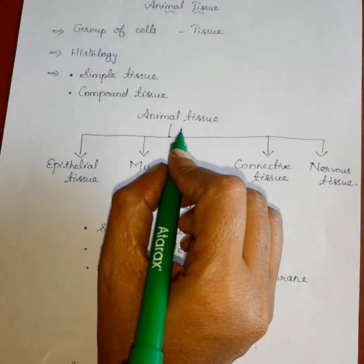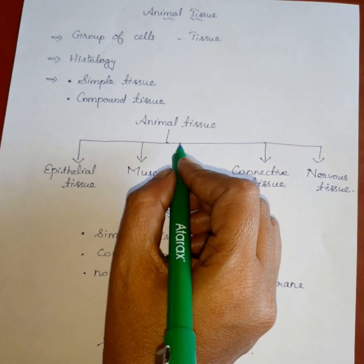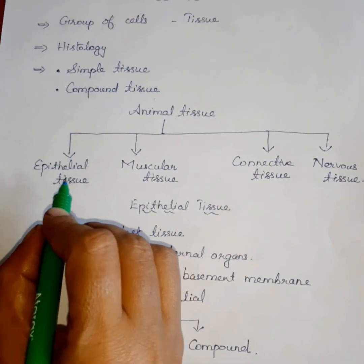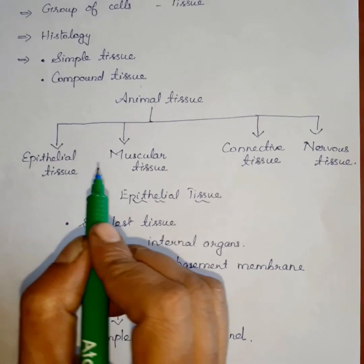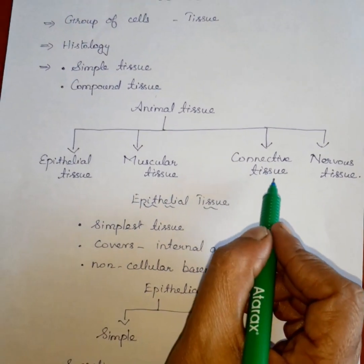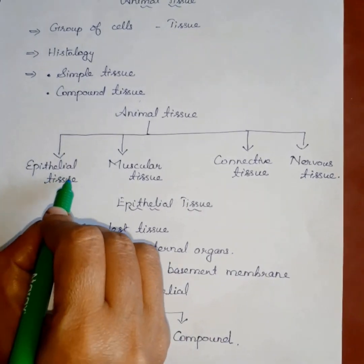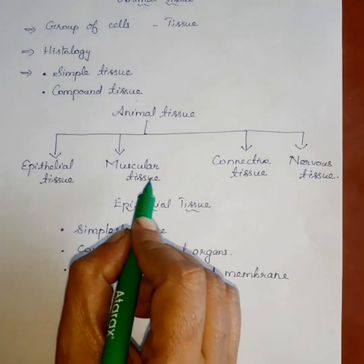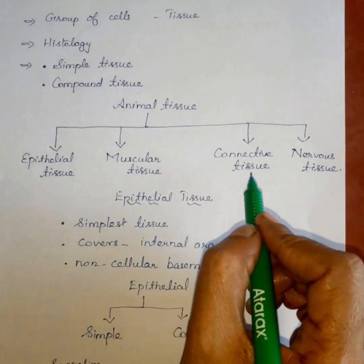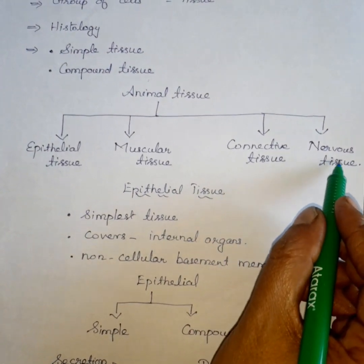The animal body has four types of tissue: first is epithelial tissue, second is muscular tissue, third is connective tissue, and fourth is nervous tissue.